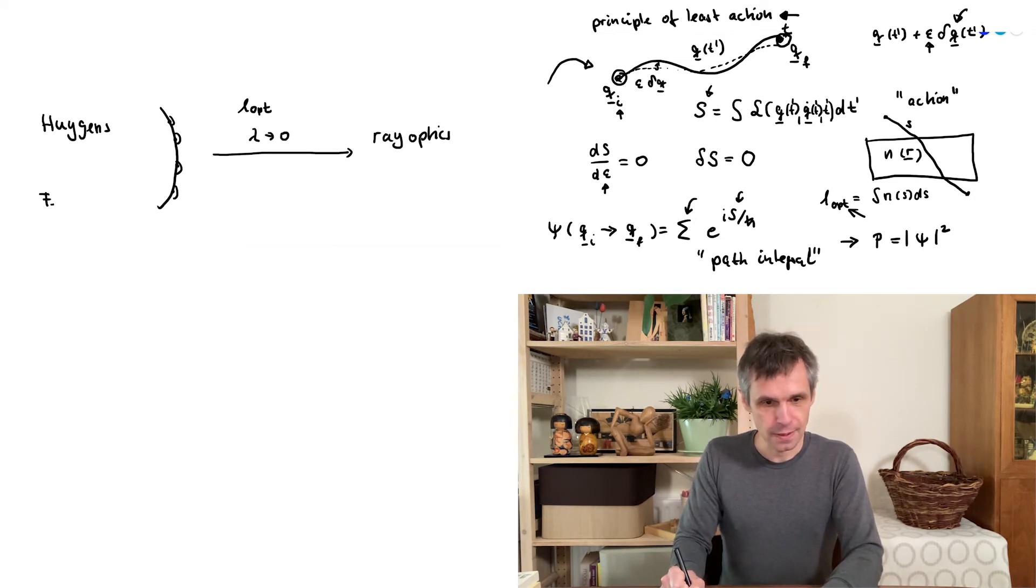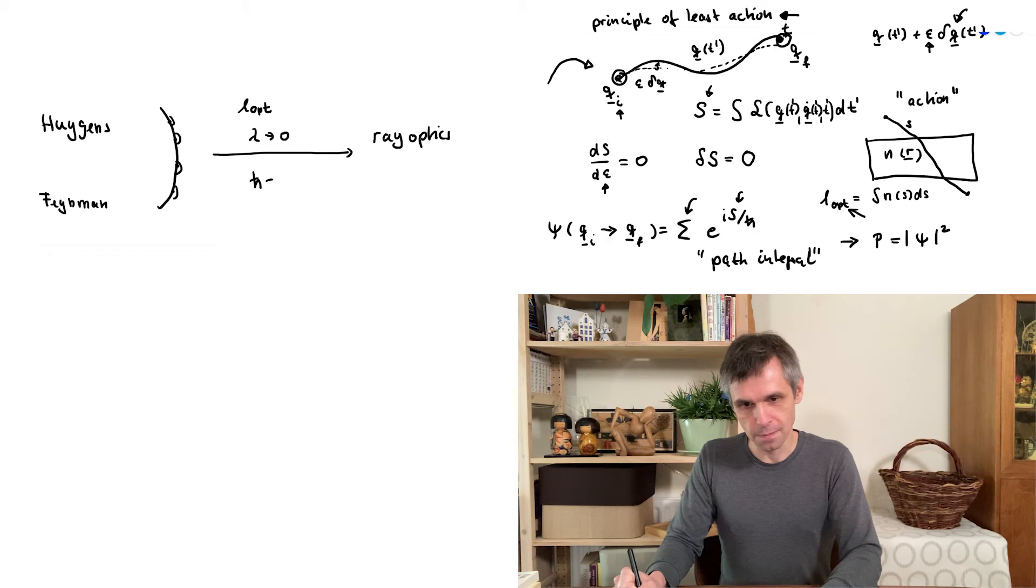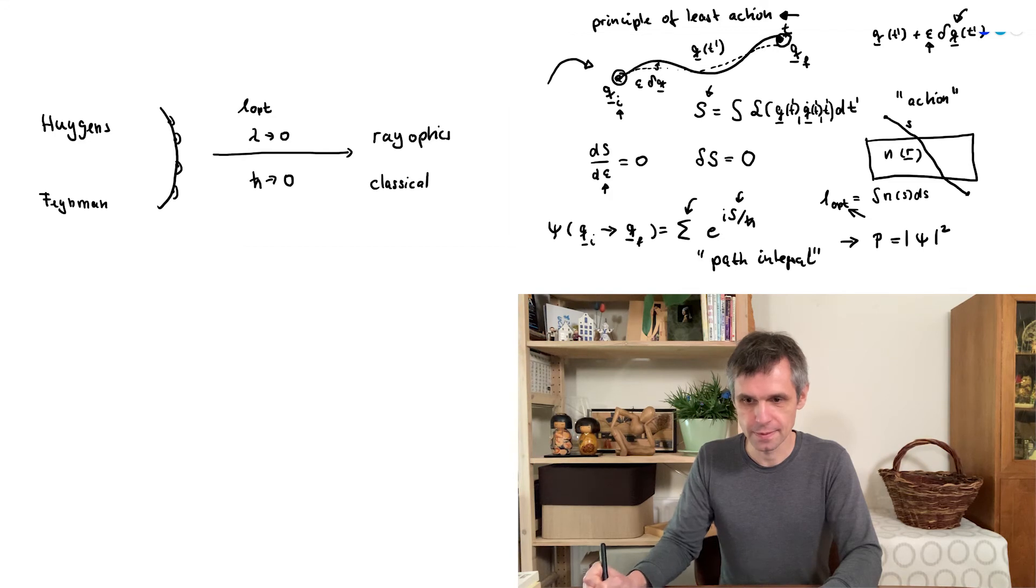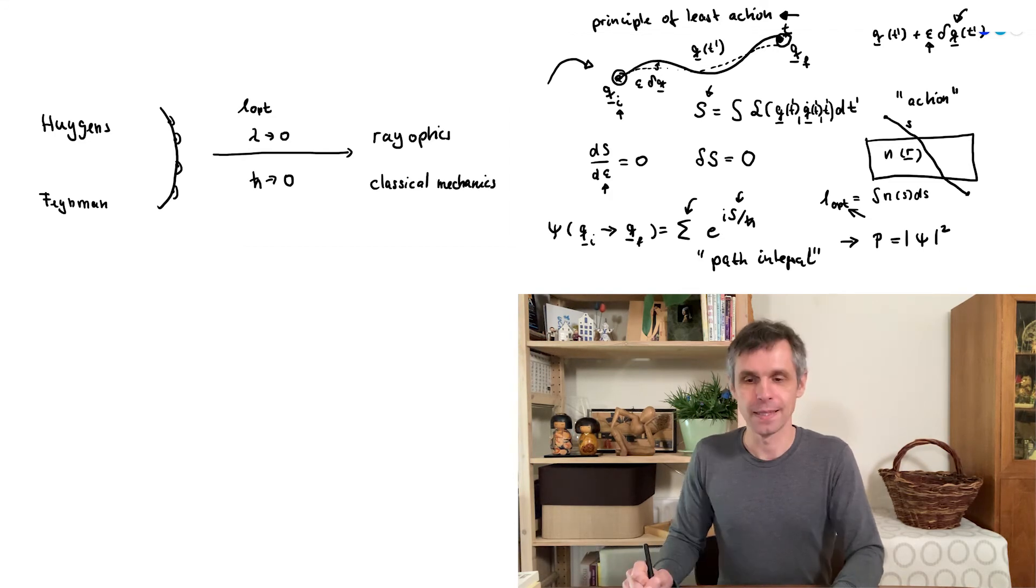And there you would then simply exploit that the intensity becomes focused on paths which minimize the optical path length. And very similarly you can start from Feynman's path integral formalism and consider the limit where the Planck's constant is very small and then arrive at classical mechanics. And when you carry out the technical steps you simply exploit that the classical paths fulfill the principle of least action.